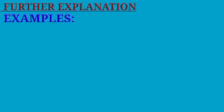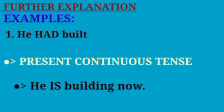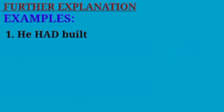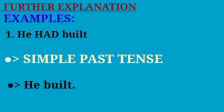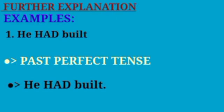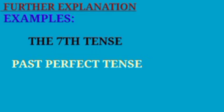For further explanation, let's compare with other tenses using 'build' as an example: Simple Past — He built. Present Continuous — He is building. Present Perfect — He has built already. Present Perfect Continuous — He has been building. Past Continuous — He was building. Past Perfect — He had built. That is the seventh tense. Thank you very much. Assalamualaikum.